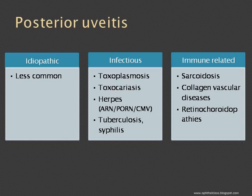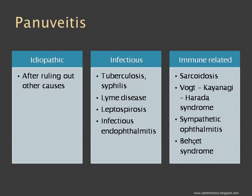Pan uveitis: after anterior uveitis, pan uveitis is the most common type seen in clinical practice. It has an idiopathic variety. For infectious causes, the main ones are tuberculosis and syphilis; add to these Lyme disease and leptospirosis. Infectious endophthalmitis is also quite commonly seen, either post-operative or post-trauma, involving the entire interior of the globe.